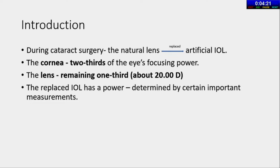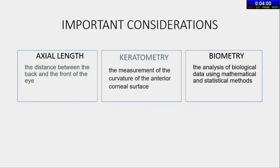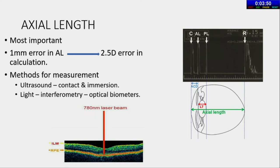Coming to biometry - in cataract surgery, the natural lens is replaced by an artificial IOL. Remember, the cornea is responsible for two-thirds of the focusing power, and the lens is responsible for approximately one-third - approximately 20 diopters. The replaced lens power has to be calculated according to certain measurements, the most important being axial length, keratometry (the study of the anterior curvature of the corneal surface), and biometry (analysis of biological data using mathematical and statistical tools). A 1 mm error in axial length will give rise to a 2.5 diopter error in the IOL power calculation.